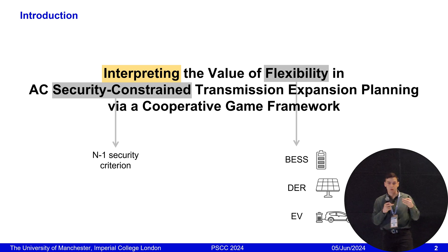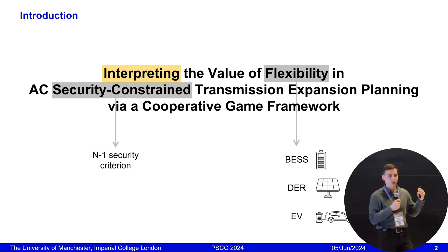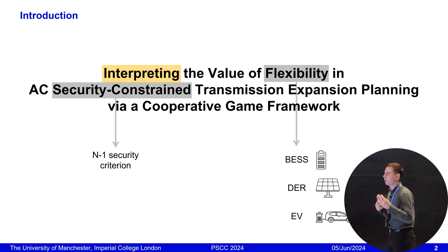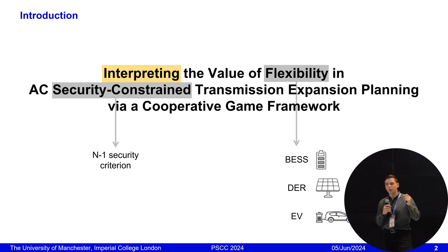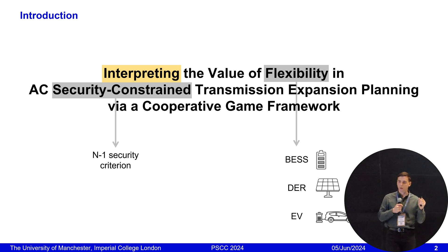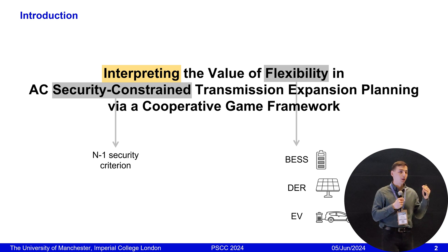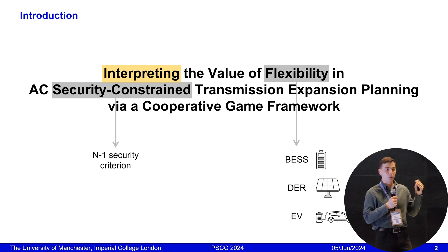We are looking into the future. We have some demand growth forecast and we need to know how to upgrade our system — what new lines, what new resources to build. But we are considering not a simple planning problem, but a security-constrained problem. By security constraint, we mean that we include the N-1 security criterion. This criterion means that we are considering various contingencies, one at a time.